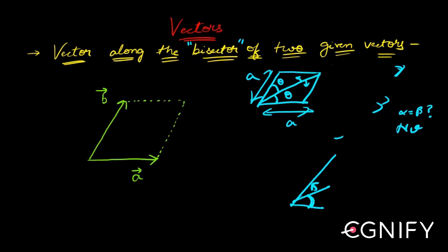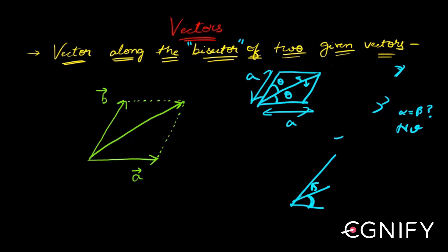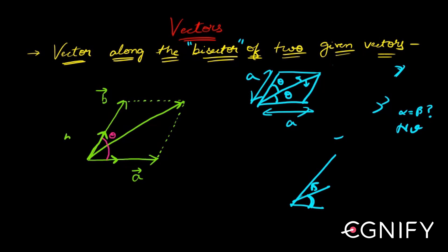Here, you construct a parallelogram using the two vectors — the resultant is ā + b̄. But you can't guarantee that ā + b̄ bisects the angle between ā and b̄. To make sure it bisects, take a unit vector along each direction. The unit vector along b̄ is b̂, which is b̄ divided by |b|.